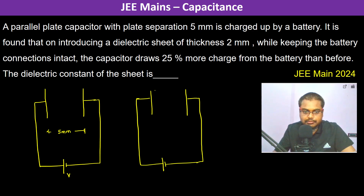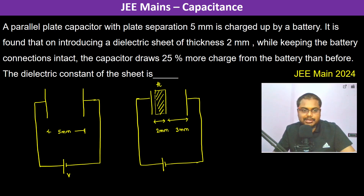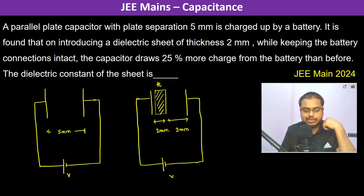A dielectric sheet with dielectric constant K and thickness of two millimeters is introduced into the capacitor. The remaining air gap is three millimeters. While keeping the battery connections intact, the capacitor draws 25% more charge from the battery than before. We need to find the dielectric constant of the sheet.